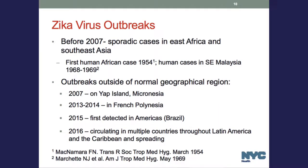In terms of prior Zika outbreaks, before 2007 these were mainly sporadic cases in East Africa and Southeast Asia — the first human African case in 1954 and first human cases in Asia in 1968-69. Other outbreaks occurred in Micronesia and French Polynesia. It wasn't until 2015 that the virus was first detected in Brazil, and in 2016 it began circulating in multiple countries throughout Latin America and the Caribbean.